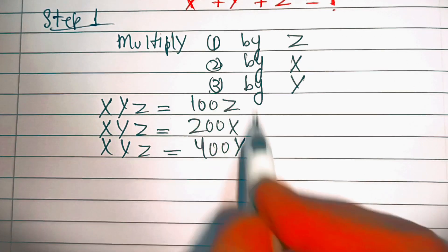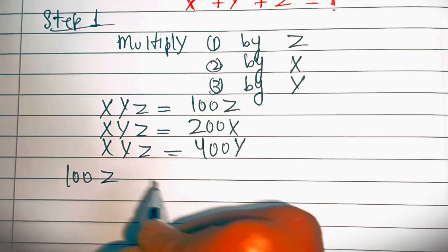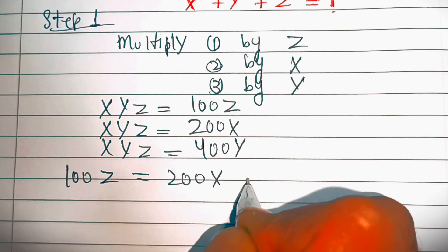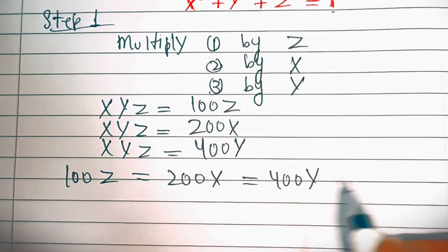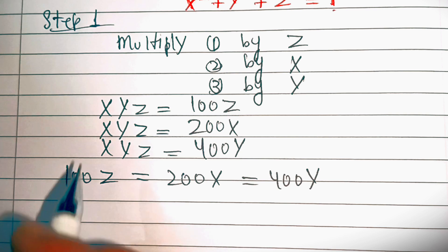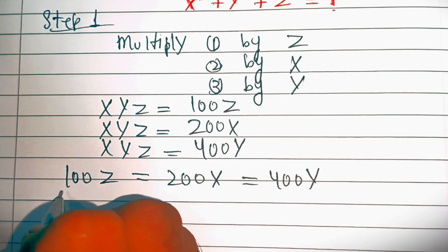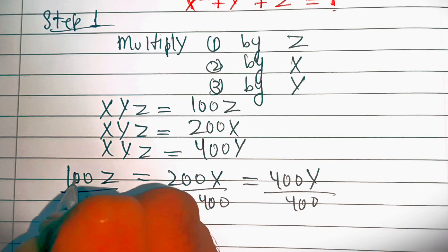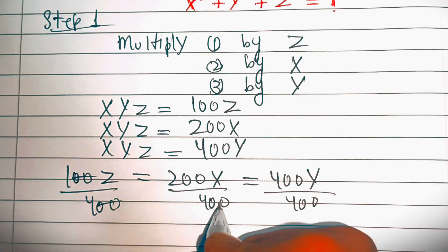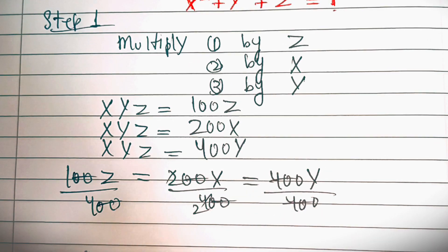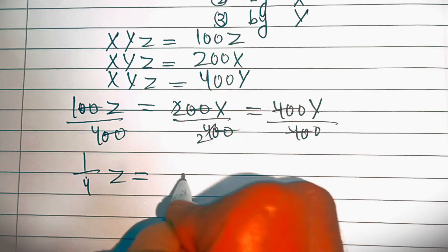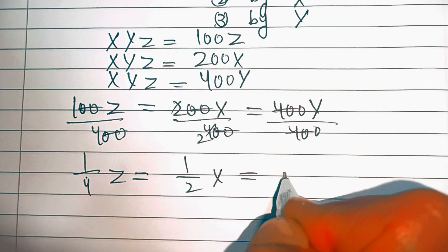Now, equate these equations. We have 100z equal to 200x equal to 400y. Now in the next step, divide throughout by 400. The zeros cancel out, so we have z over 4 equal to x over 2 equal to y.